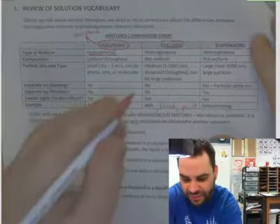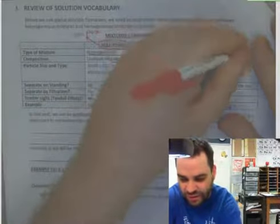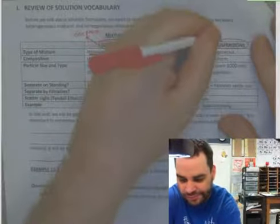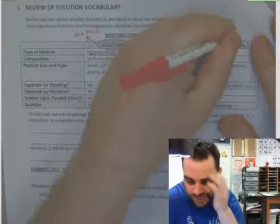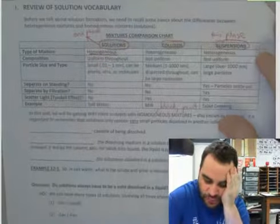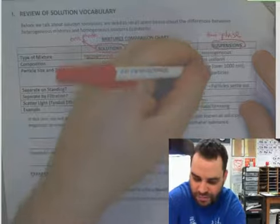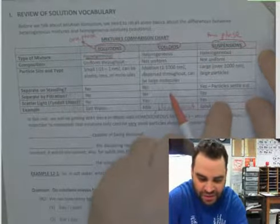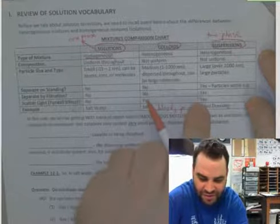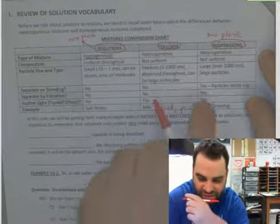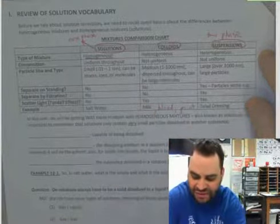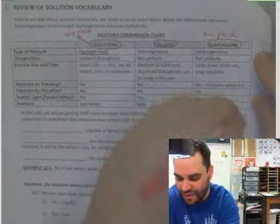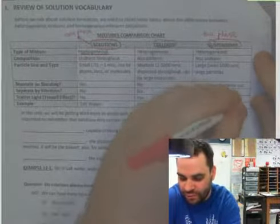And then finally, suspensions. These are the ones that are two phases. They are not uniform. The particles are really big, so gravity pulls them out. So, thusly, they separate on standing. They separate by filtration. And you can scatter light with them. An example would be salad dressing. Or my favorite example is muddy water.